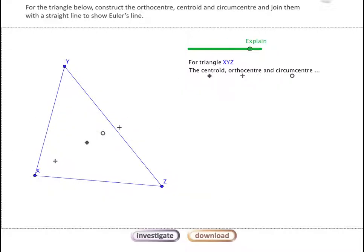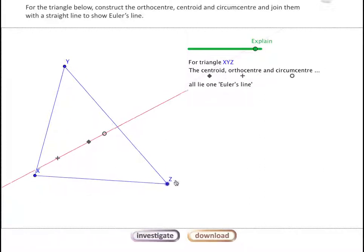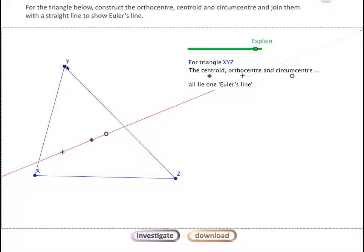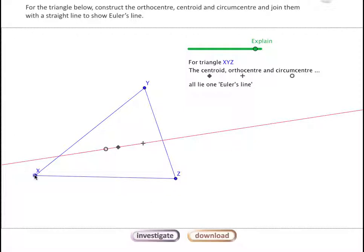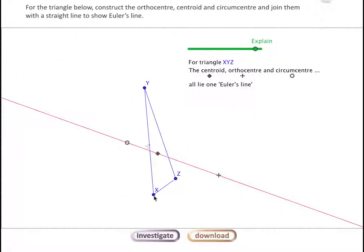The interesting property that emerges when we consider all three is that it's always possible to draw a straight line that will go through all three of them. We can show that there. It doesn't matter how we rearrange the points or the vertices of the triangle. It's always possible to draw a straight line through the three centers.